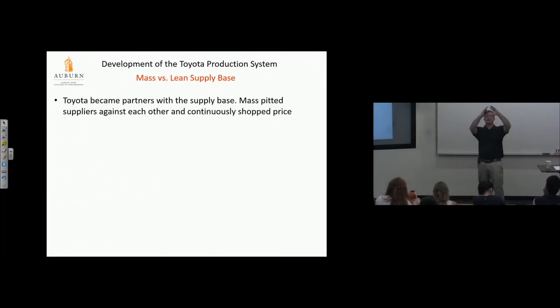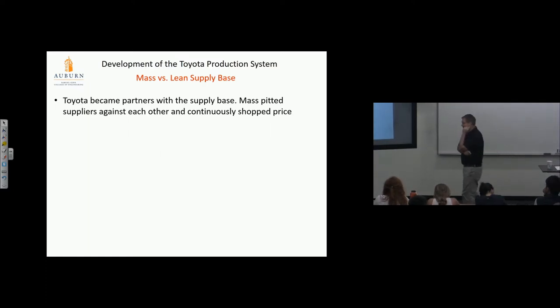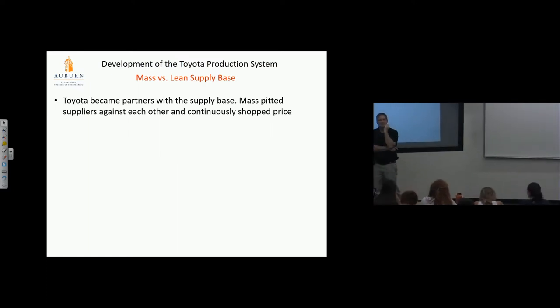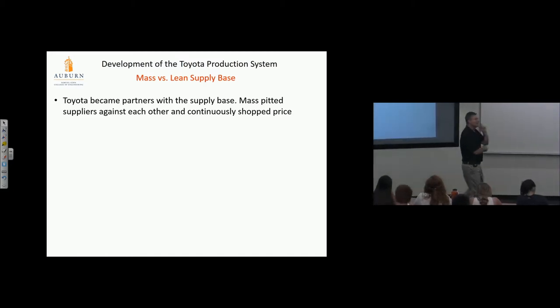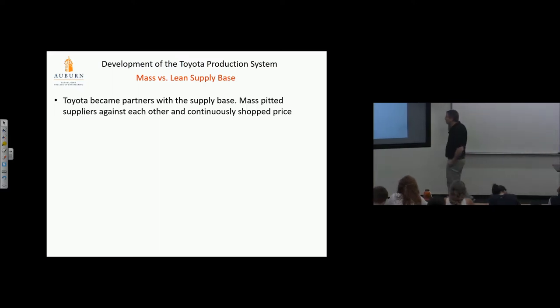The supply base. Here's the OEM assembly plant, here's the supply base. If that's not impacted, we're gonna have minimal success. Toyota became partners with their supply base. Mass production pitted suppliers against each other and continually shopped price. I was at the Deming lecture—Deming asked the purchasing guy, 'What do you do?' The guy said, 'I work in purchasing for GM.' Deming said, 'Oh, maybe my grandson can get a job with you because he knows the difference between a high and a low number.' That was his point—you don't think, you don't care about the process, you don't care how it integrates into manufacturing. You care whether it's a dime instead of 15 cents.